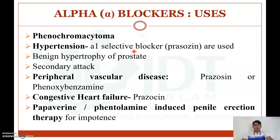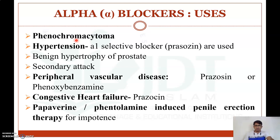The uses of alpha blockers: they are mainly used for pheochromocytoma, which is a cancerous condition of the adrenal medulla. In pheochromocytoma, there is excess release of adrenaline, producing excess sympathetic effects. Alpha blockers are used to prevent the adrenergic effects due to pheochromocytoma.